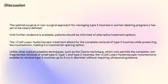Until further evidence is available, patients should be informed of alternative treatment options. The cold loop hysteroscopic treatment allows for the complete removal of type 3 myomas while preserving the myometrium, making it a myometrium-sparing option. Unlike other cold enucleation techniques such as the Osorio technique, which only permits the complete non-fragmented removal of small type 0, type 1, and type 2 myomas, the cold loop hysteroscopic myomectomy enables removal of type 3 myomas up to 3 cm in diameter without requiring ultrasound guidance.